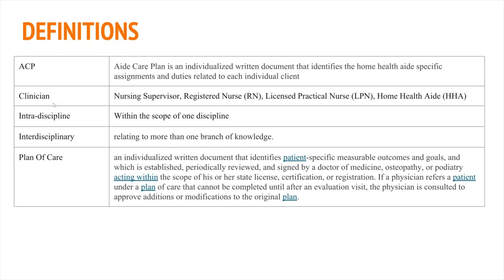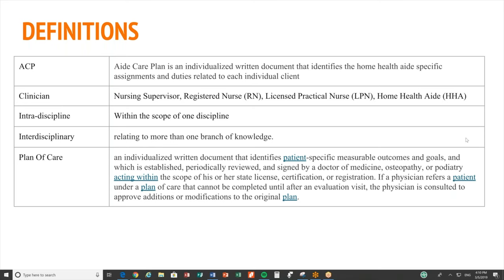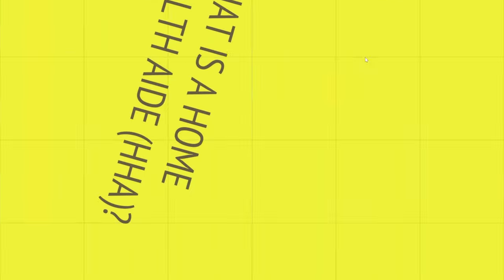Intradiscipline is within the scope of one discipline, whereas interdisciplinary is related to more than one branch of knowledge. Finally, the plan of care is an individualized written document that identifies patient-specific measurable outcomes and goals, which is established, periodically reviewed, and signed by a doctor of medicine or osteopathic physician acting within the appropriate scope.